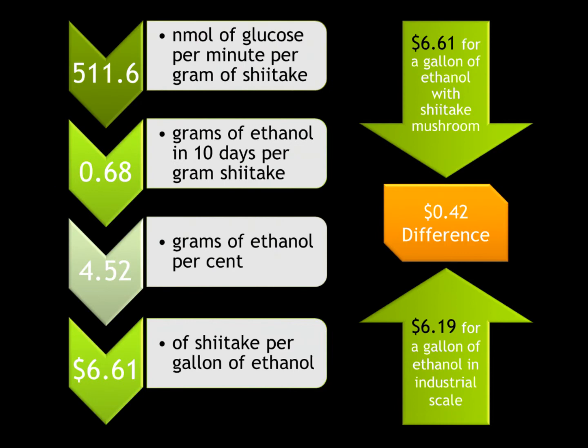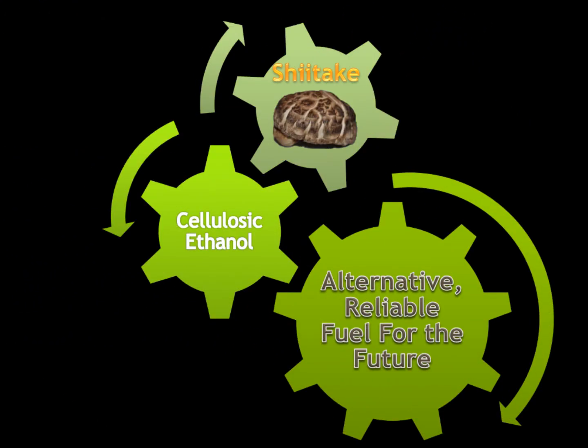Calculations indicate that the shiitake mushroom can generate a gallon of ethanol for approximately $6.61, which is comparable to the $6.19 cost of the enzyme at industrial scale. Once conditions are optimized, shiitake can be used for industrial biofuel production. Furthermore, shiitake significantly lowers the cost of industrial and academic biofuel research.